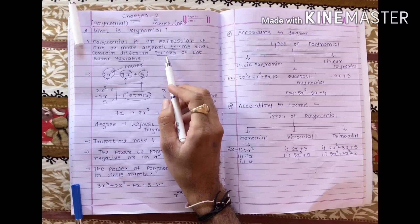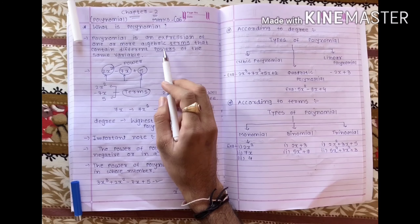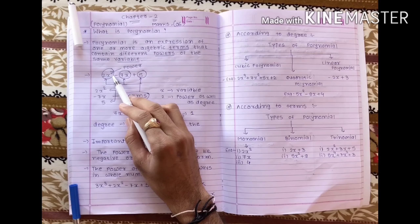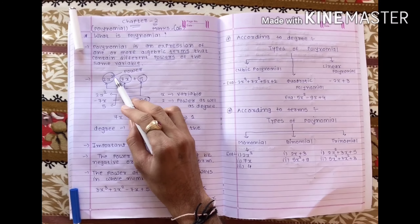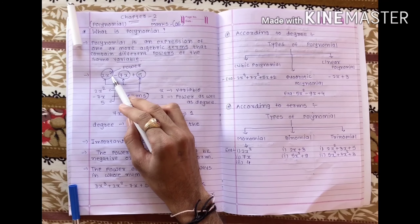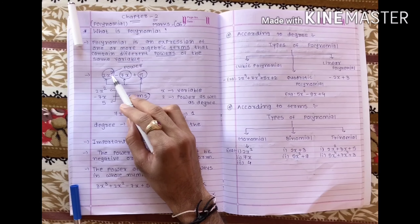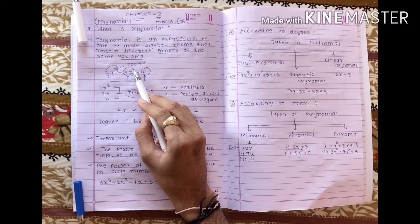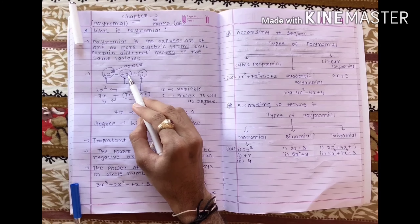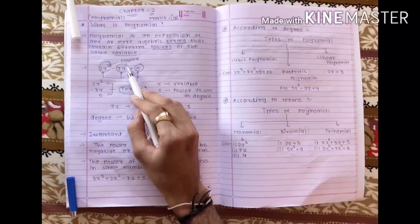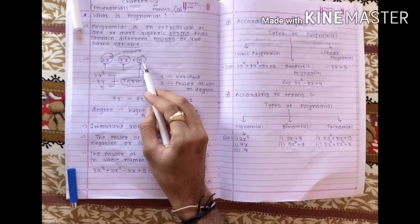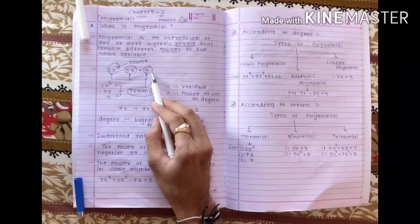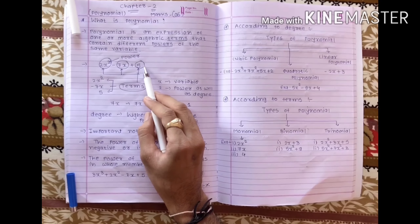Next comes power. Power kya hota hai? The value placed above x in mathematical digit form is called power. The first term's power is 2. In the second term, nothing is shown, but when there is a variable with no visible power, its power is 1. In the third term, there is no variable, so its power is 0.